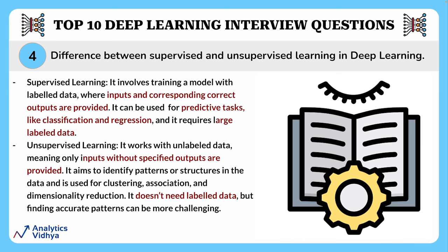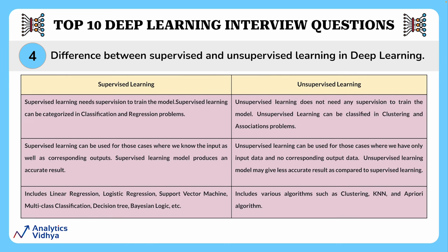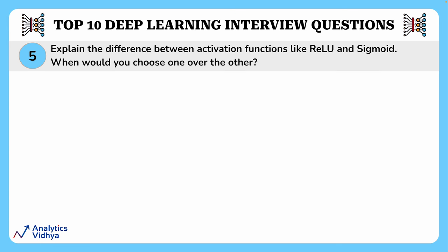Unsupervised learning works with unlabeled data — only inputs without specified outputs are provided. This is like exploring patterns on your own without guidance. It aims to identify patterns or structures in the data and is used for clustering, association, and dimensionality reduction. It doesn't need labeled data, but finding accurate patterns can be more challenging.